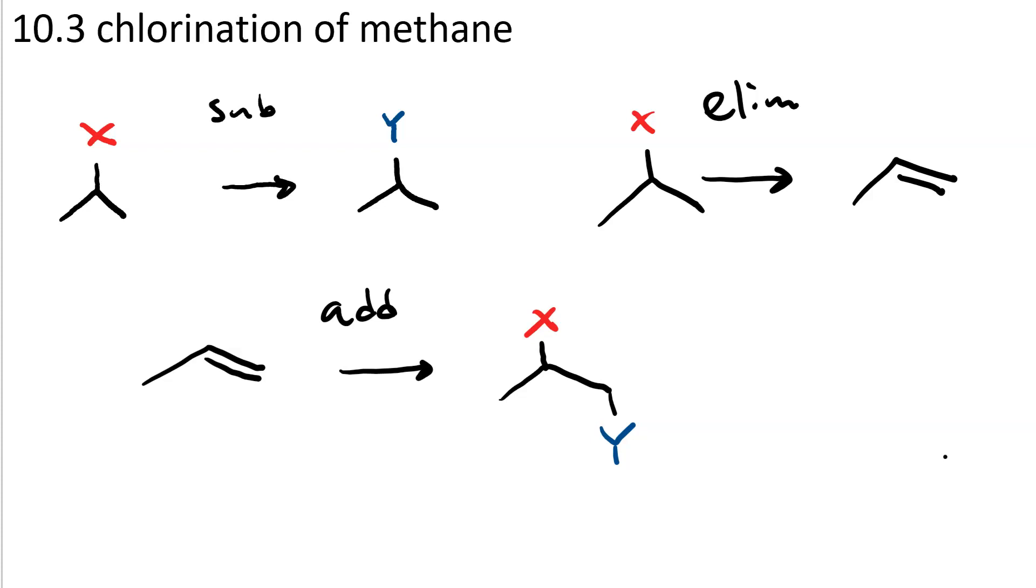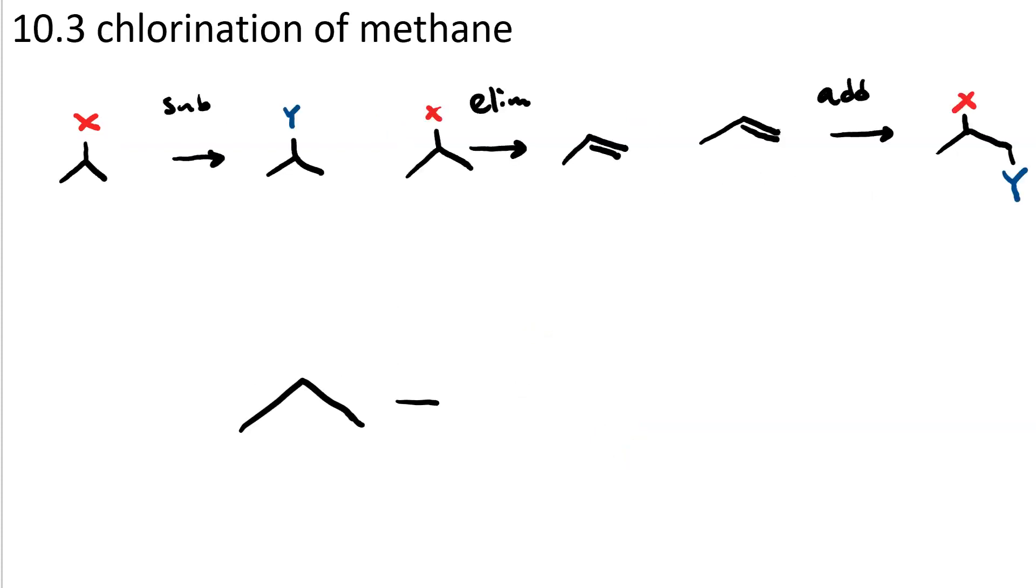For all these types of reactions, our substrate has something that we can change. So far, if we get to an alkane, it is a synthetic dead end. As of right now, we don't know anything to do with an alkane. There is no leaving group to substitute or eliminate. There is no pi bond to add to.